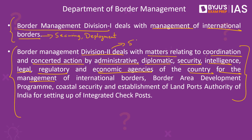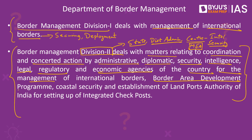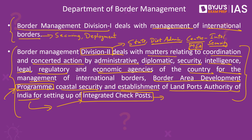Division 2 coordinates with state governments, district administration, and all concerned central agencies dealing with international borders — including intelligence agencies, security forces, border guarding forces, and the Ministry of External Affairs responsible for diplomatic relations with neighbouring countries. Division 2 also implements the Border Area Development Programme, which focuses on promoting socioeconomic development in border areas. It is also responsible for coastal security and establishing the Land Ports Authority of India, a statutory authority for setting up and maintaining Integrated Check Posts to promote trade and movement of people along India's land borders.